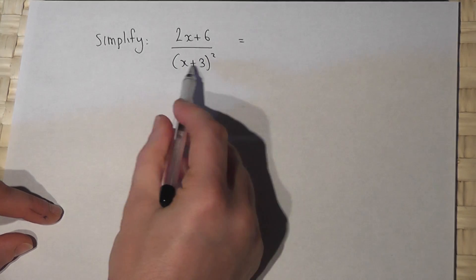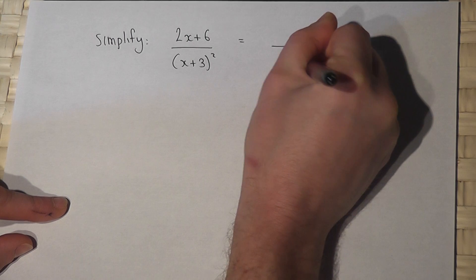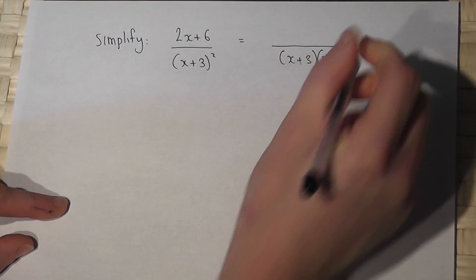The bottom is already factorized, but I will write it as two brackets multiplied together to help show what actually happens here.